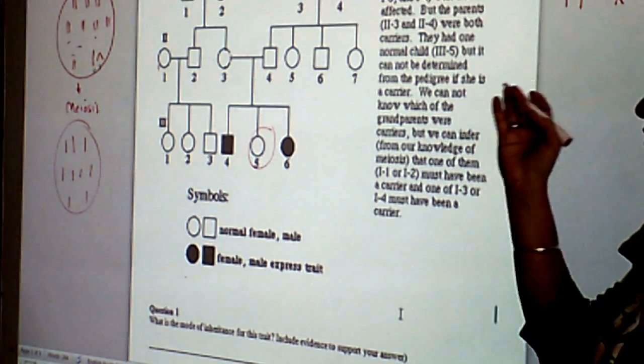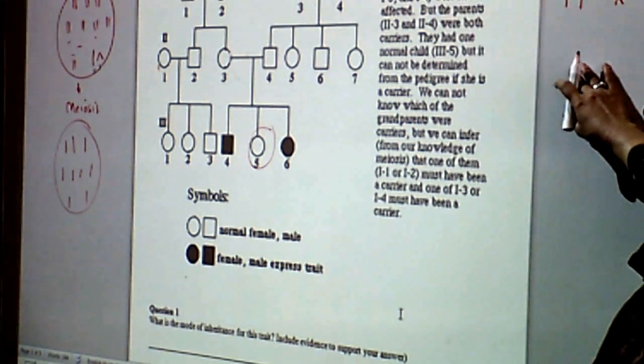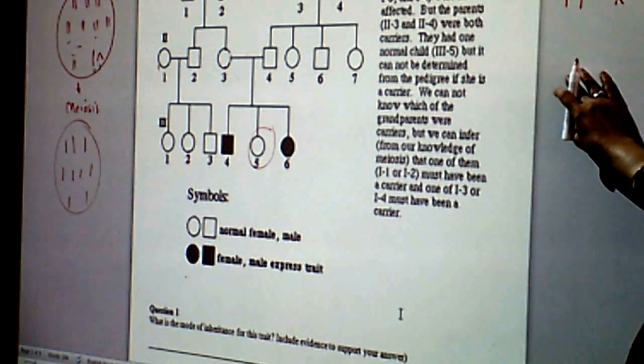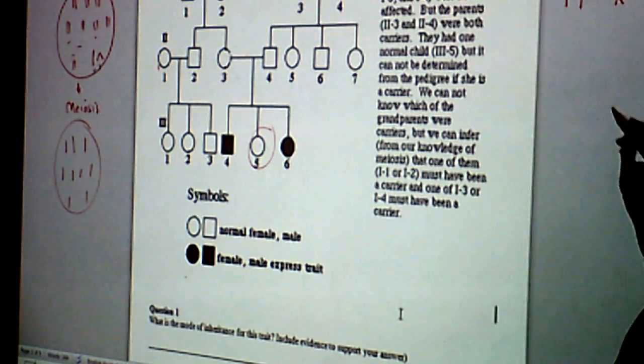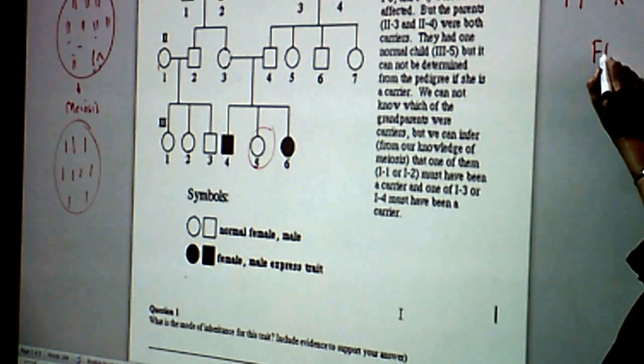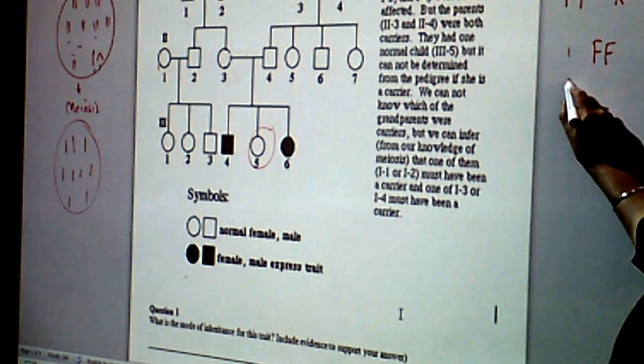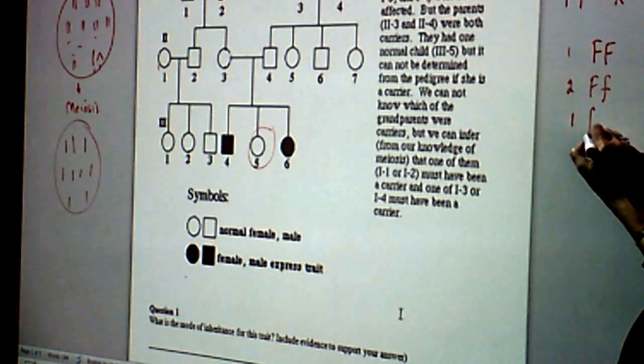Now from memory, from a monohybrid cross, you should already know the outcome of this cross. So what would be the outcome in the genotype? 3 to 1. Genotype, 1 to 2 to 1. So 1 of this one, 2 of that, and 1 of this.